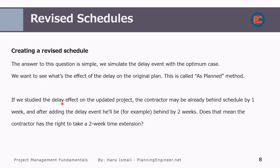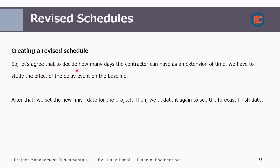If we study the delay effect on the updated schedule, the contractor may already be behind schedule by one or two weeks. After adding the delay event, he will be, for example, behind by two weeks. Does this mean the contractor has the right to take two weeks? Definitely not. We will discuss this point specifically in the claims section. So to decide how many days the contractor can have as an extension of time, we have to study the effect of the delay event on the baseline.